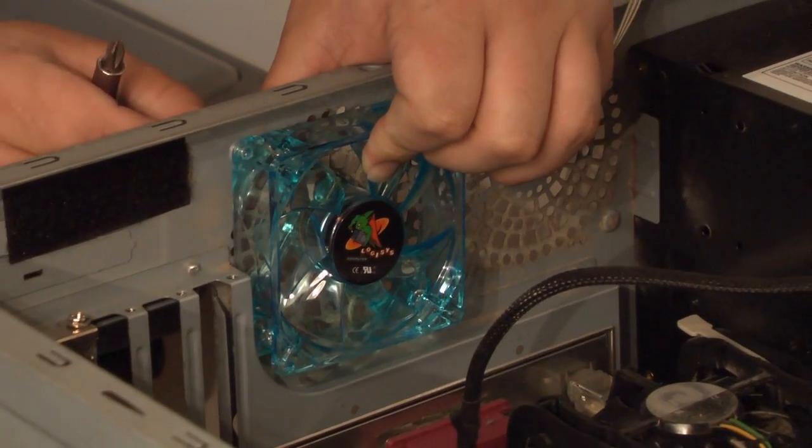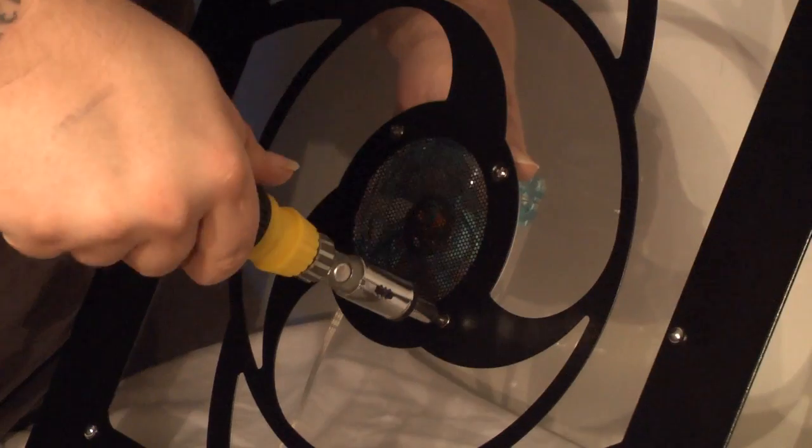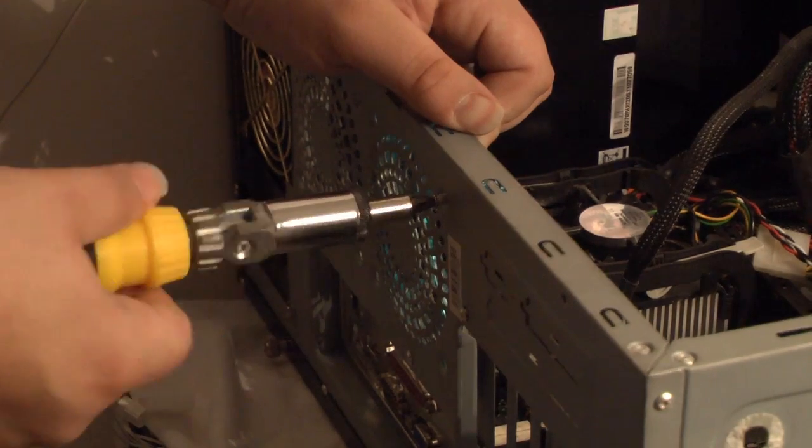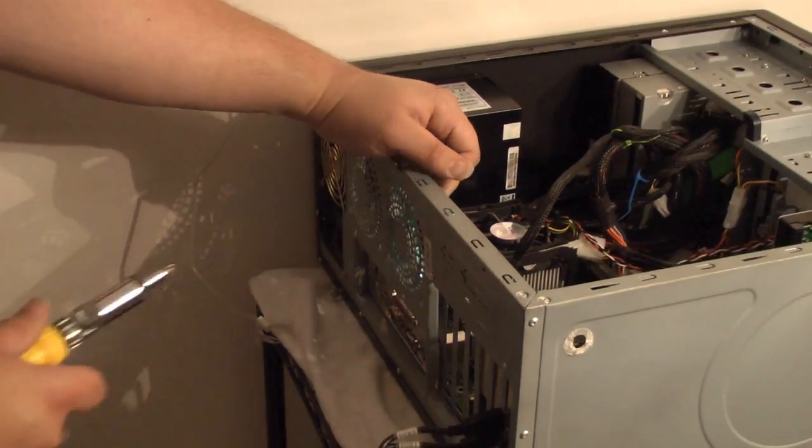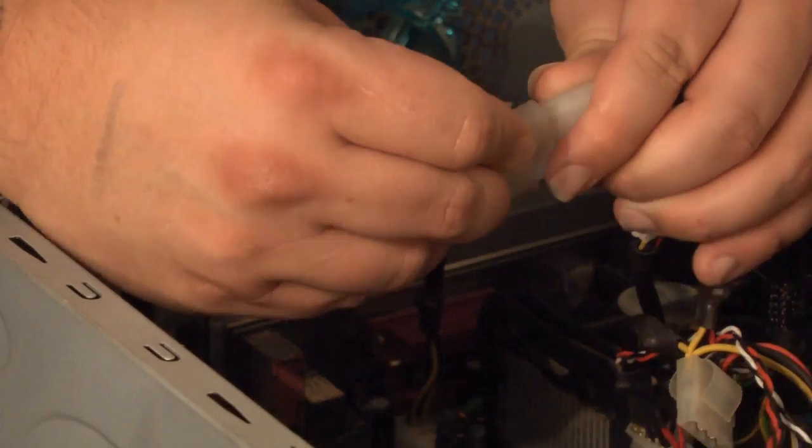The actual install is simple. Simply use your hand to hold the fan against the side, line up the holes, and insert the screws. Keep the fans steady and begin screwing them in. Then, plug the fan's 4-pin connector into the power supply, and you're set.